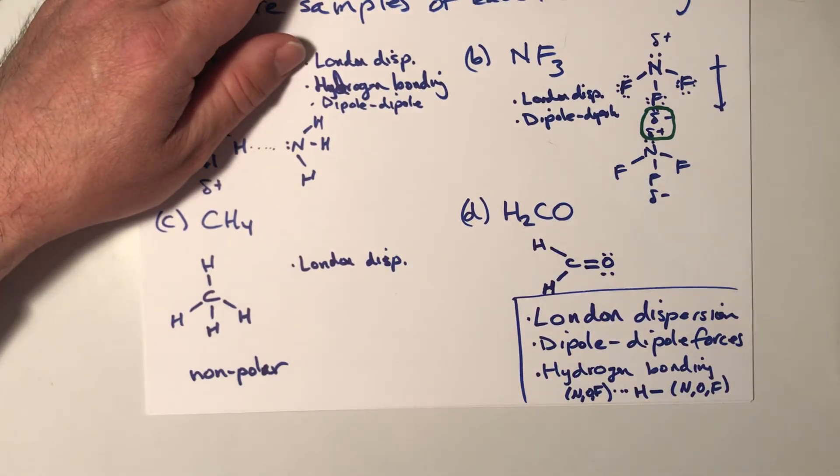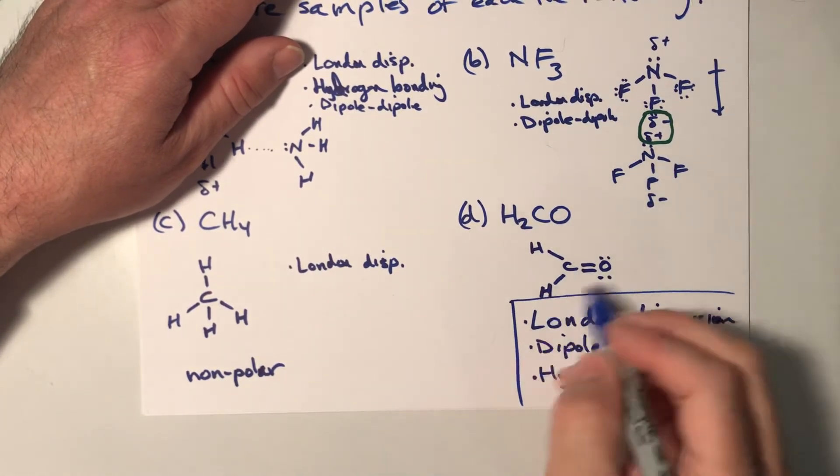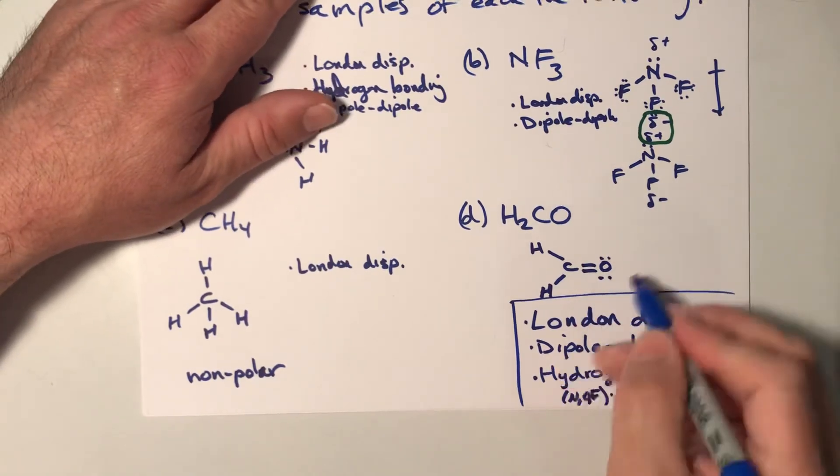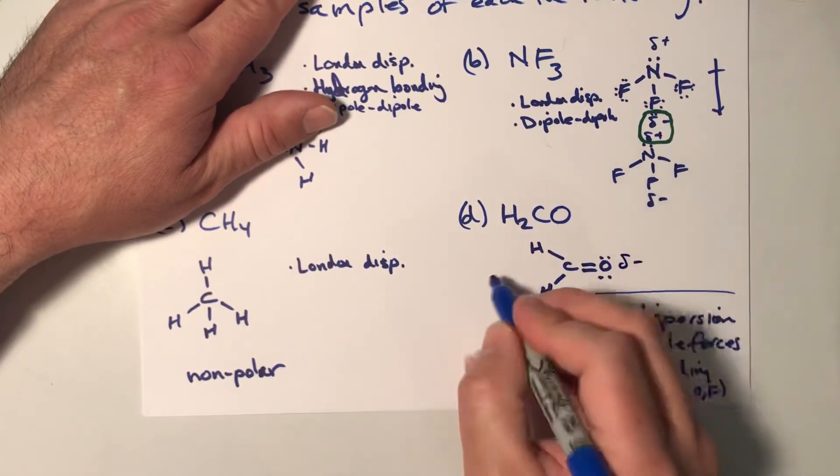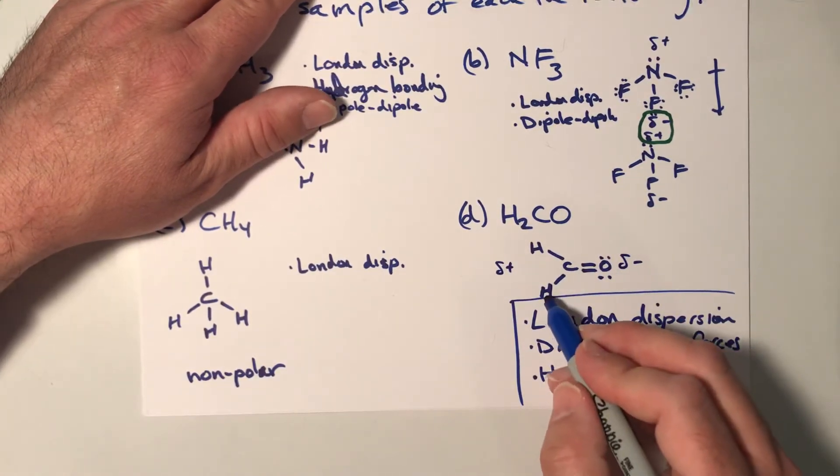All right. So this is a symmetric shape. It's trigonal planar, but the atoms around the outside are not the same. So we, in fact, do observe a dipole on this molecule. So you would have a little negative over here and a little positive over here because the oxygen is more electronegative than the hydrogen.